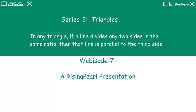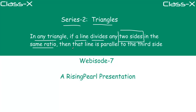Hello friends, welcome to RisingPearl.com. We are discussing series 2 where we are learning a great deal about triangles. Today is episode number 7 and today we are going to learn that in any triangle, if a line divides the other two sides in the same ratio, then that line must be parallel to the third side.